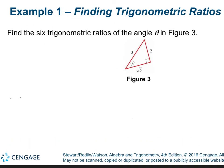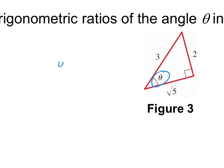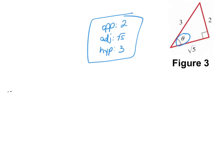So if you have a question that says find all 6 trig functions, the first thing I would do is identify the angle I'm looking at and label everything. What is the opposite side? What is the adjacent side? And what is the hypotenuse? The hypotenuse is always the easiest to find — it's the longest side across from the right angle. Here, the hypotenuse is 3, opposite is 2, and adjacent is square root of 5. Now you don't even have to look at your triangle again.